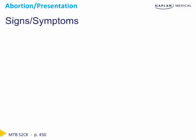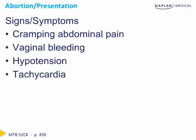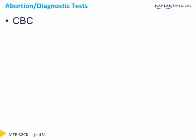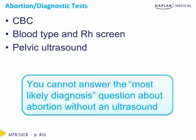The signs and symptoms seen with presentation of abortion should seem familiar after our discussion about ectopic pregnancy, which is why that workup is so important. Signs and symptoms include cramping, abdominal pain, vaginal bleeding, and potential vital sign changes such as hypotension and tachycardia, depending on the amount of blood loss. The workup for a suspected abortion includes a CBC to evaluate blood loss and need for transfusion, a differential to assess for potential infection, a blood type and RH screen, and a pelvic ultrasound to help distinguish between the different types of abortion. It's important to remember you can't answer the most likely diagnosis question about abortion without an ultrasound.